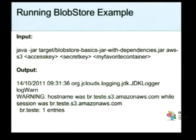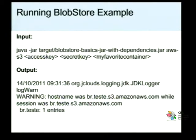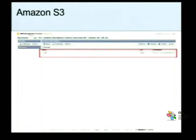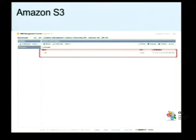Uma vez que você executa isso, o resultado é que, apesar de dar um log de warning, parece mais uma mensagem de informação. Ele diz lá br.teste, uma entrada. Então ele adicionou — tinha zero entradas inicialmente — e agora ele vai mostrar o resultado, que foi a inclusão de uma chave 'teste' com conteúdo 'testData'. Nós usamos a API do jClouds para inserir esse par chave-valor dentro do container br.teste lá na Amazon S3.